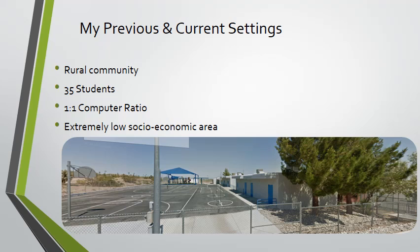By January, computers from the technology department were brought in for my students. With only 35 students in the school, we actually had more than a one-to-one ratio of students to computers throughout the school. This was because we were completely Title One and all of the Title One funds had paid for the computers. They didn't all work perfectly, but we had them. However, because we were so rural, we didn't get a fast internet connection and couldn't run all the programs we were supposed to use.